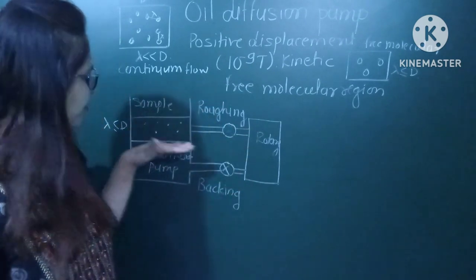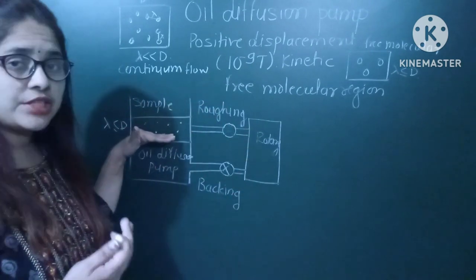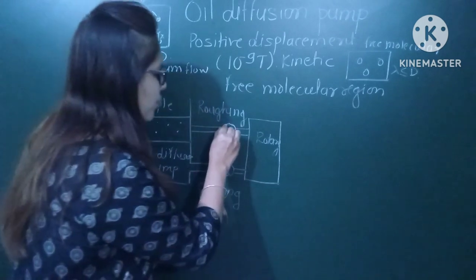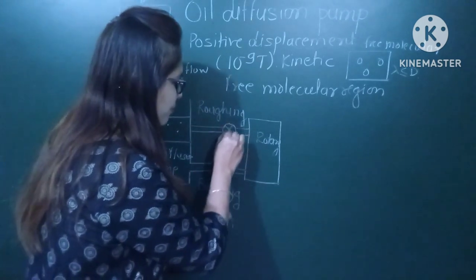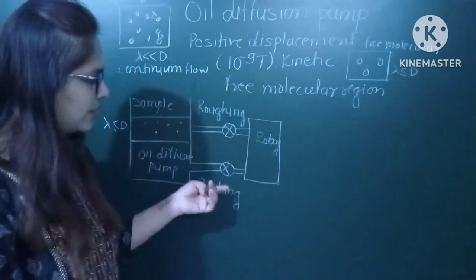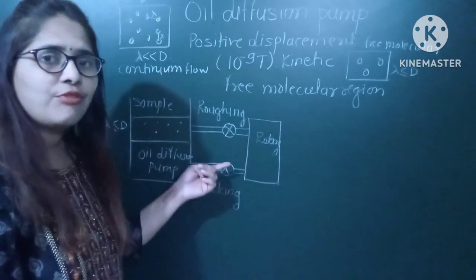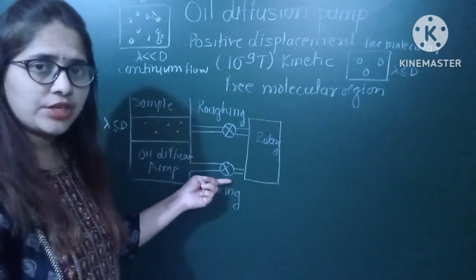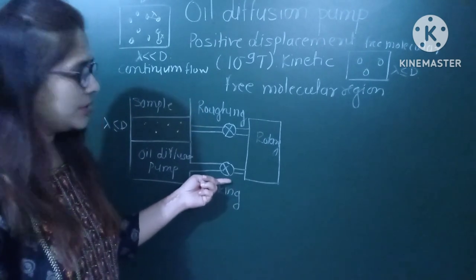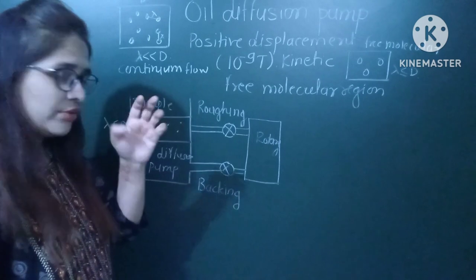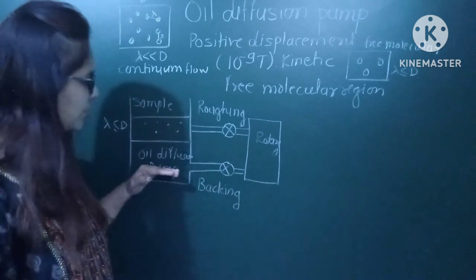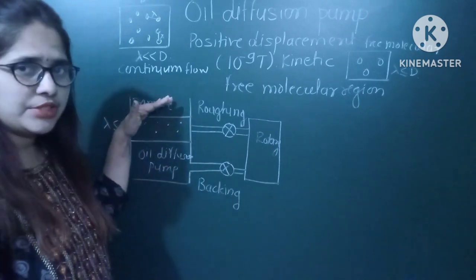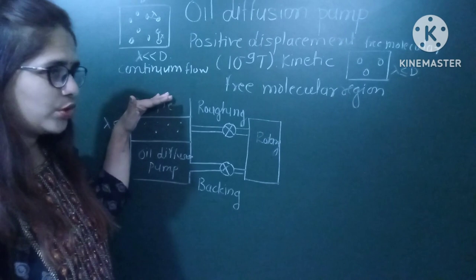The purpose of the rotary valve pump is to remove air molecules as a preliminary stage for the oil diffusion pump — hence it is called the roughing valve. Once the free molecular region is attained, we close the roughing valve and the backing valve comes into play.